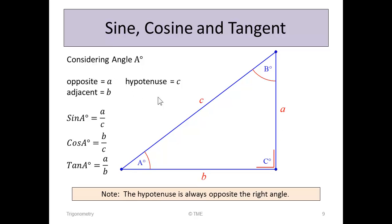Considering angle A then, we can see that for angle A the opposite is A, the adjacent is B, and the hypotenuse is C. So sin A would be opposite over hypotenuse, A over C. Cos A is adjacent over hypotenuse, B over C. And tan A is opposite over adjacent, A over B.